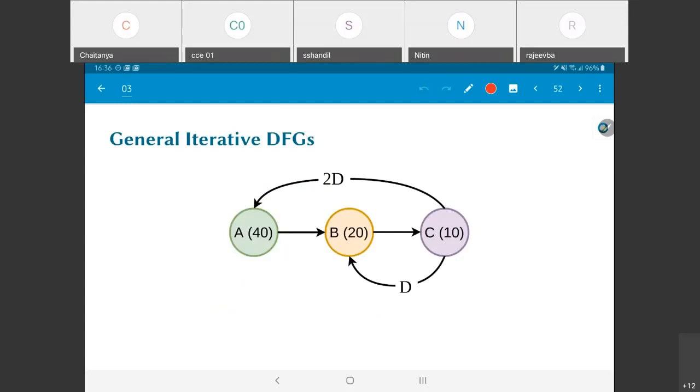This graph that I have drawn over here is also homogeneous, right? There are no numbers on the different edges to indicate how many values are produced or consumed. This 2D and this D are the initial tokens, initial value tokens. And the question is, now what can I do with this?